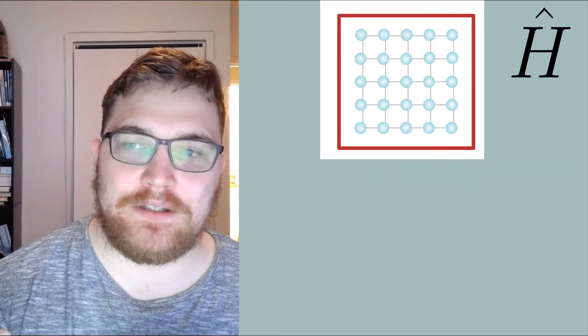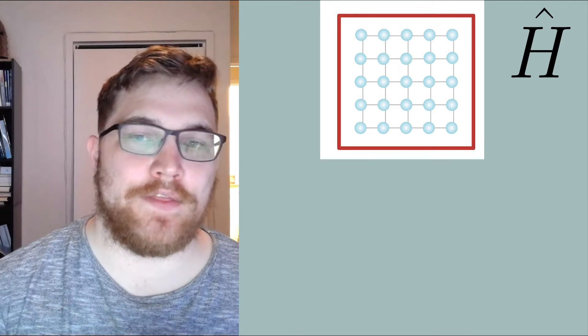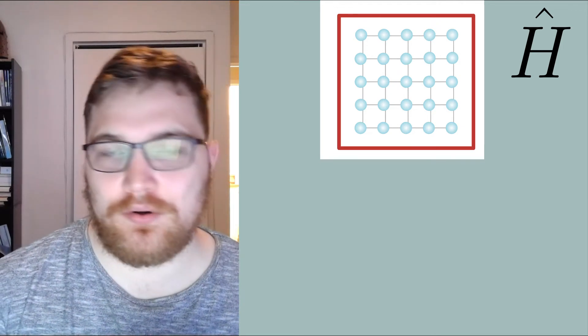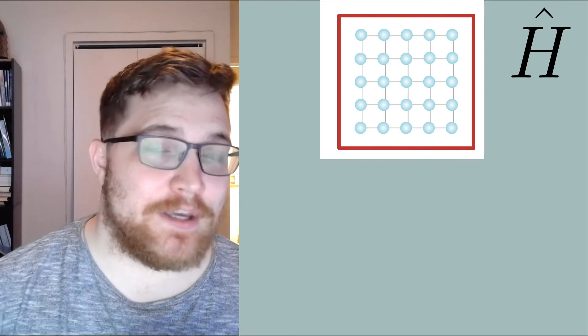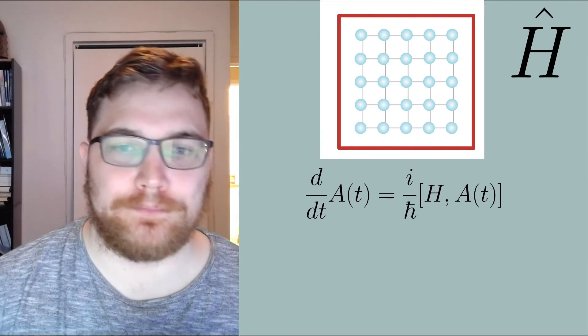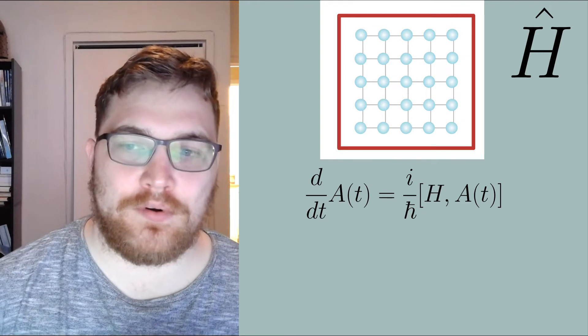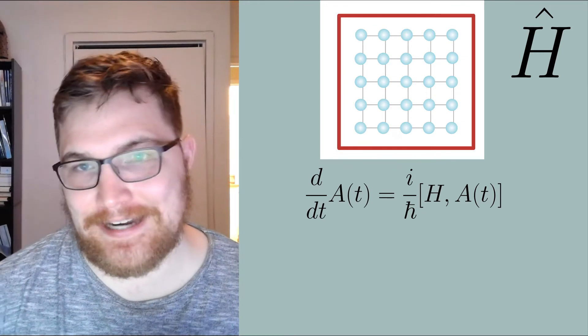For this one, let's imagine an isolated system governed by some Hamiltonian H. Up until now we have been ambiguous with whether or not the dynamics are classical or quantum mechanical, but for this example let's specifically appeal to the Heisenberg equation where we assume that the observable does not have any explicit time dependence.